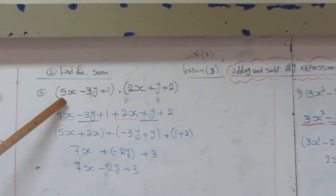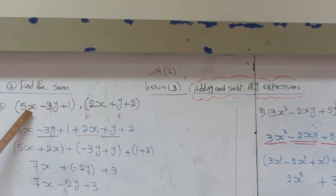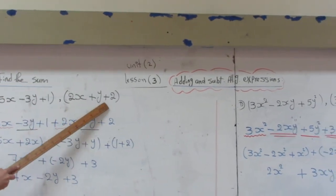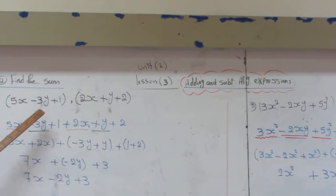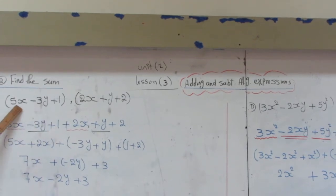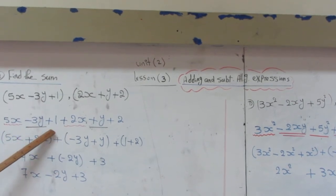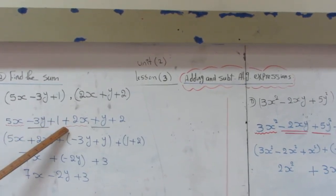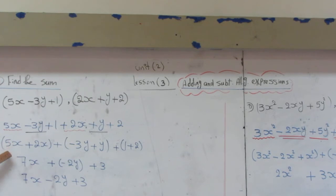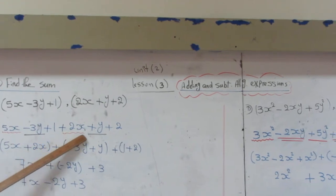The second way, which I prefer, is the way we will go on to one point. Find the sum of 5X minus 3Y plus 1 as the first expression, and 2X plus Y plus 2 as the second expression. I will take the brackets away and the comma and the plus. I will expand the two expressions which is 5X minus 3Y plus 1. The comma will be plus because I said find the sum: 2X plus Y plus 2.